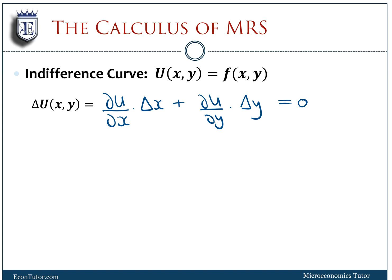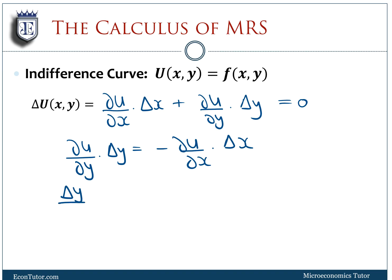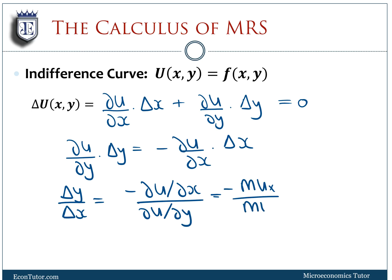We want to isolate ΔY/ΔX because that gives us the slope — rise over run. Rearranging, we get: the partial of U with respect to Y times ΔY equals negative the partial of U with respect to X times ΔX. So ΔY/ΔX equals the partial of U with respect to X over the partial of U with respect to Y. The numerator is the marginal utility of X and the denominator is the marginal utility of Y — this ratio is your MRS.